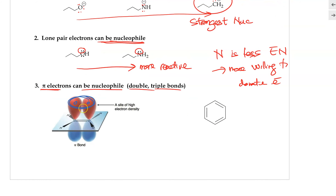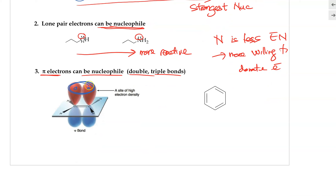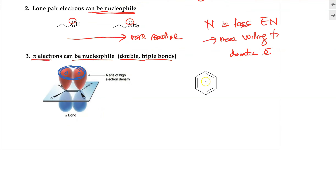The pi electrons in double and triple bonds will not be as rich in electron density compared to oxygen, nitrogen, or carbon that are negatively charged, so they will not be as strong as nucleophiles in comparison. But by themselves, they can also be nucleophiles. Similarly, benzene can also be a good nucleophile because it has up to six electrons in the ring, making it nucleophilic — and there will be a chapter dedicated to the chemical reactions of benzene as the nucleophile.